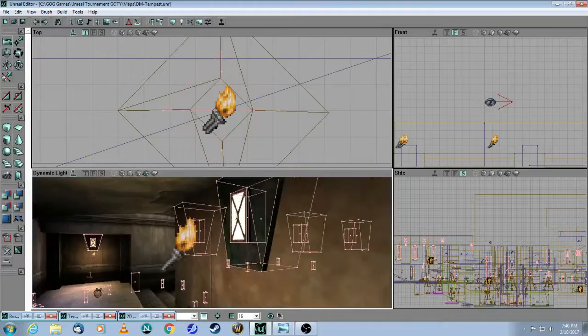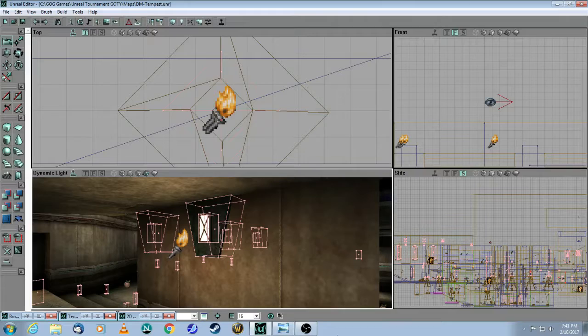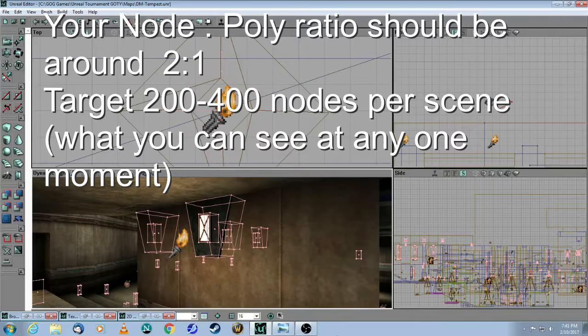So, the takeaway here is try to use semi-solids for decorative brushes that don't affect gameplay, number one. And number two, what you want to shoot for is approximately a two-to-one ratio of nodes to polys. And Tempest is highly optimized, obviously, but they were peeking out at around 280 nodes.